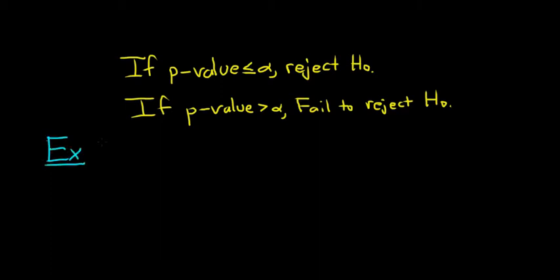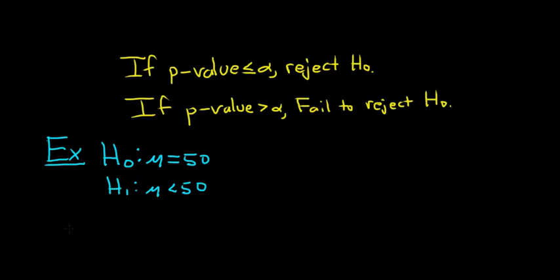Say we have a fictional hypothesis test. So H₀, that's our null hypothesis, and say it's μ — which is the population mean — equal to 50. And then our alternative hypothesis, H₁, say it's μ less than 50. In this fictional example, let's suppose that our alpha is equal to 0.05 and our p-value is equal to 0.02.